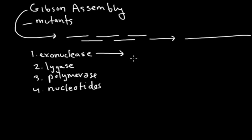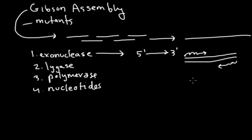The exonuclease is an enzyme that will chew back at the five prime end towards the three prime end. So for example, if you have DNA that looks like this, the enzyme will chew in this direction and in this direction so that you're left with a piece that looks kind of like this.